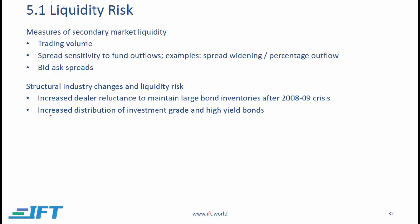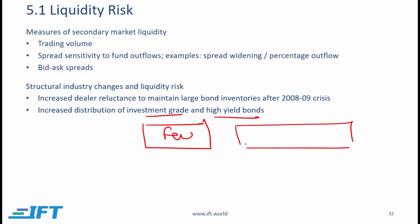The second structural change is increased distribution of investment grade and high yield bonds. In the past, a large percentage of these bonds was concentrated in a few funds, but now they are distributed across a much larger set of funds, implying higher liquidity. While the first structural change implies lower liquidity and the second implies higher liquidity, both have occurred but the first point dominates, so overall liquidity has gone down.